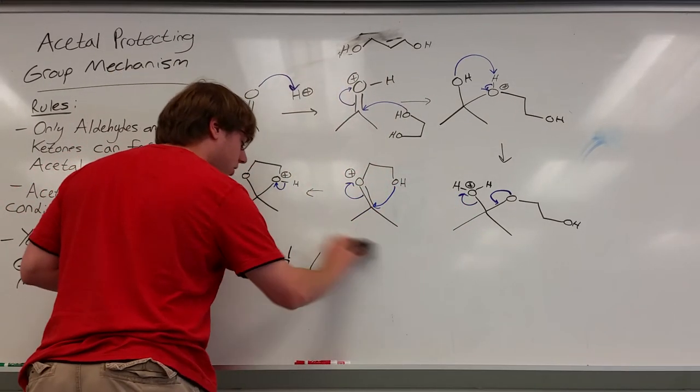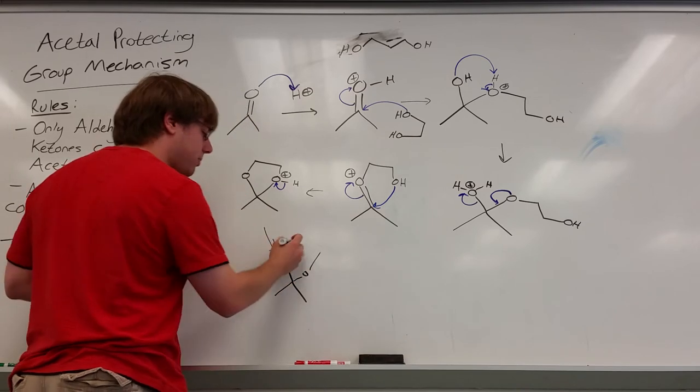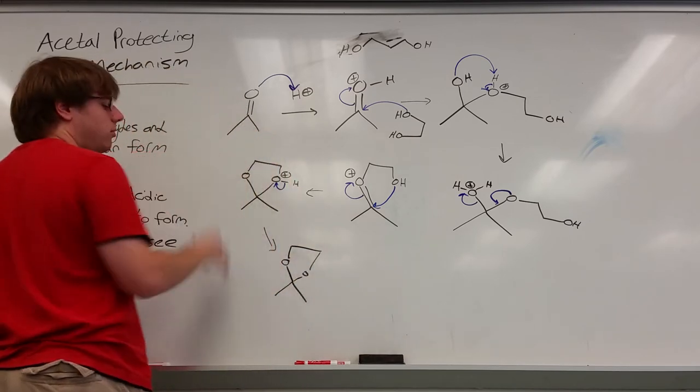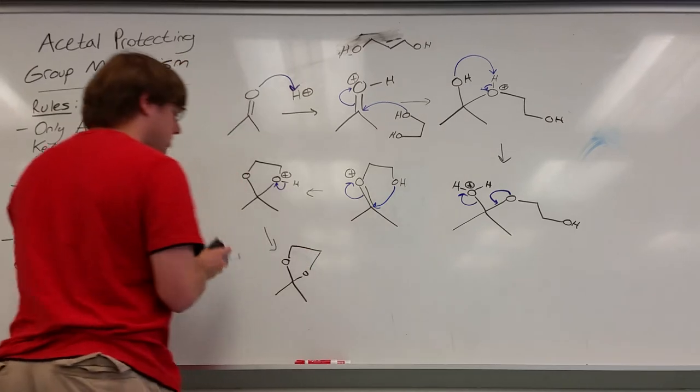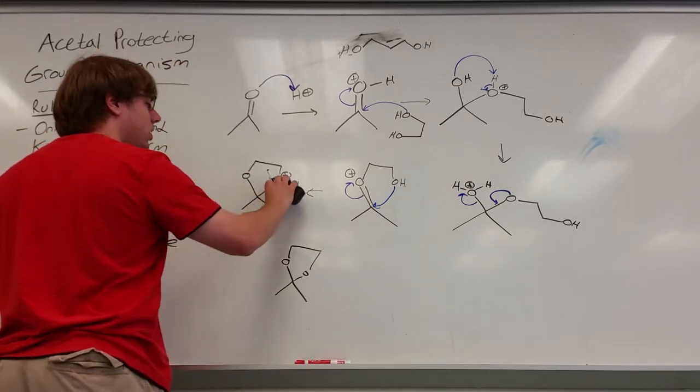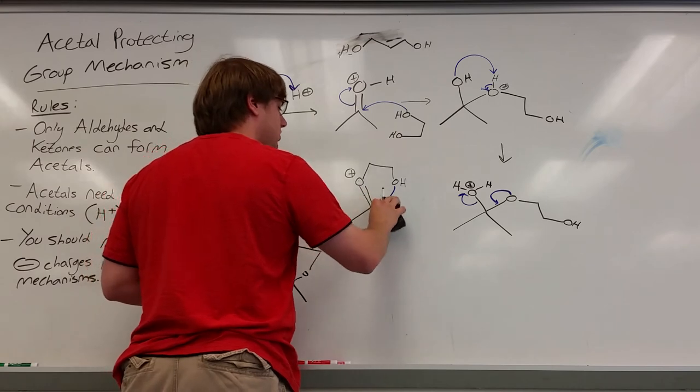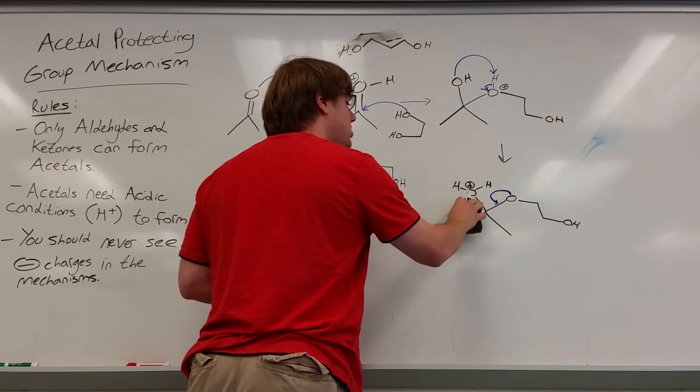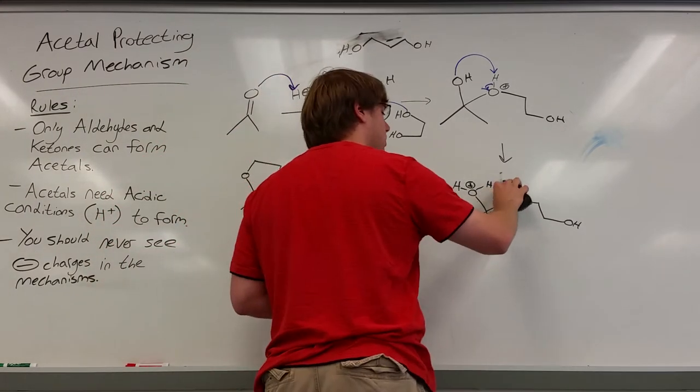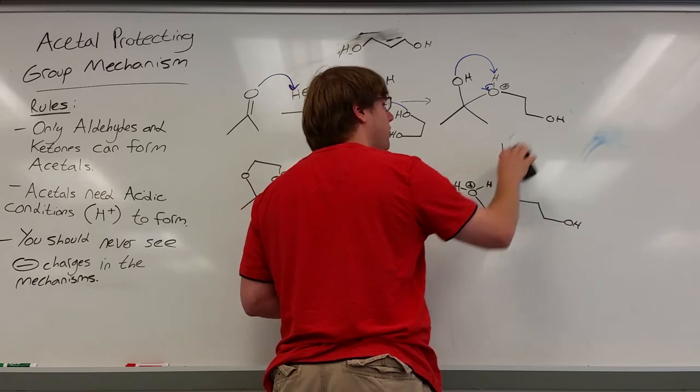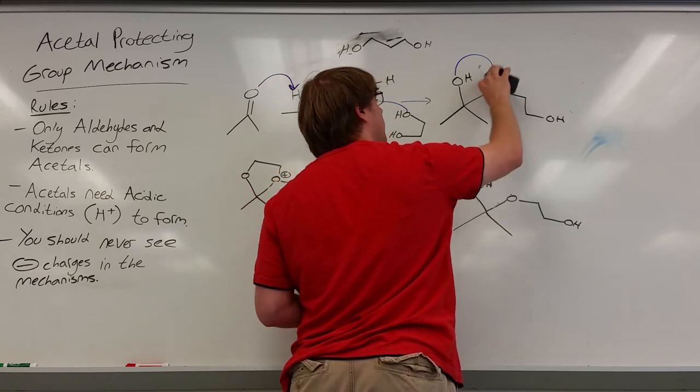Now what if I wanted to undo this? What if I wanted to break apart my protecting group and turn it back into my double bond O? How would I do that in terms of mechanisms? Well once again what I showed you in the last video is that every intermediate in these reactions going forward will match up with the intermediate of it going backwards. So if you want to write both the forward and backward mechanism on your note card by all means go ahead.